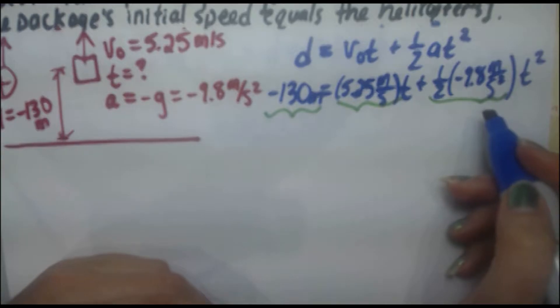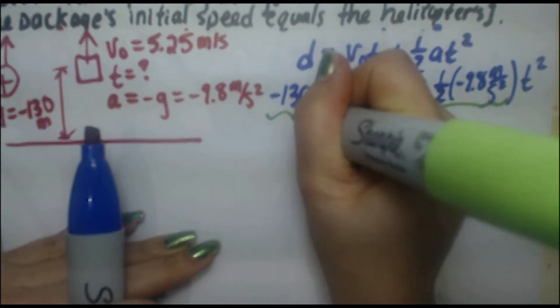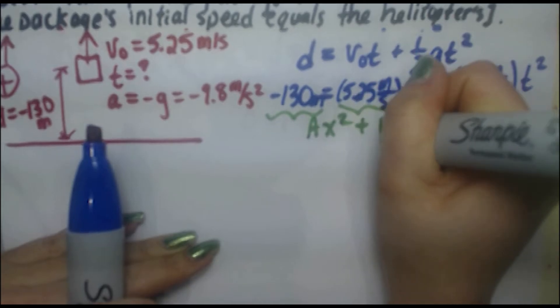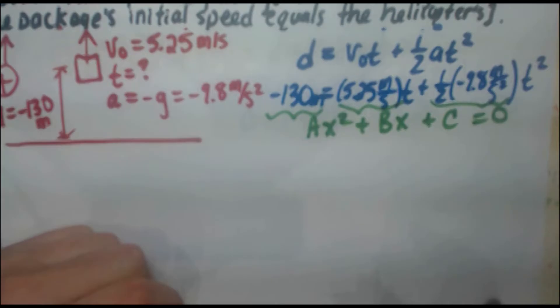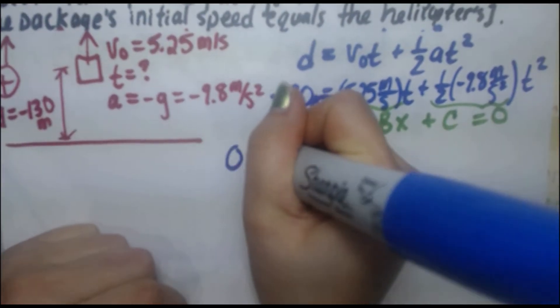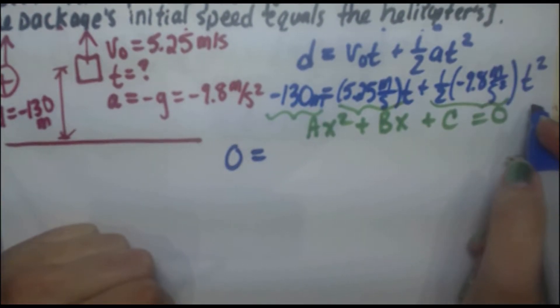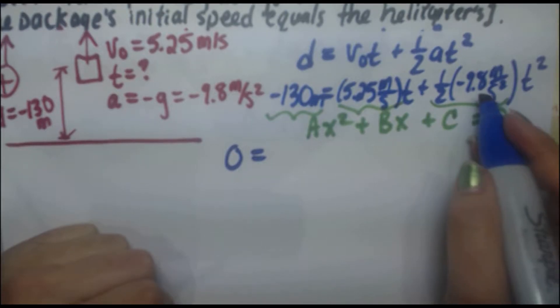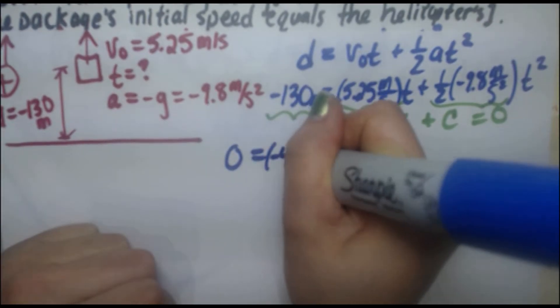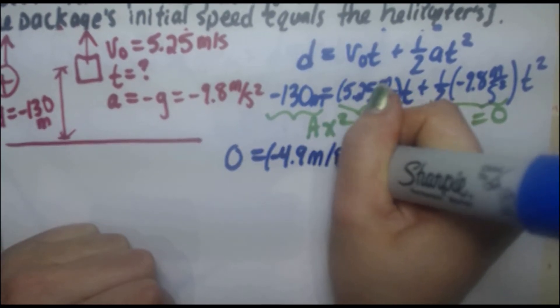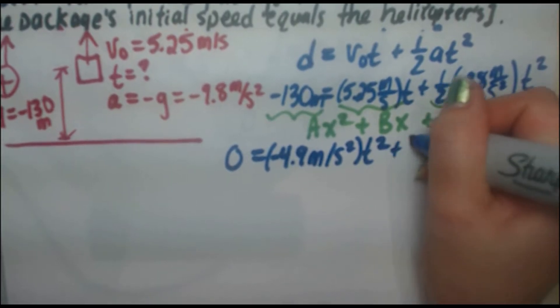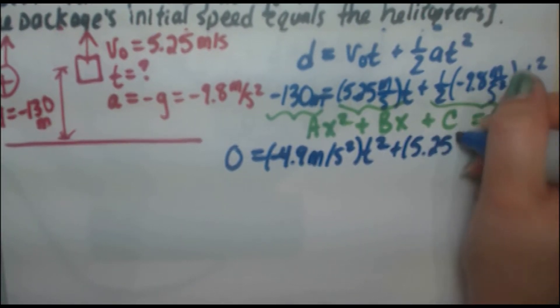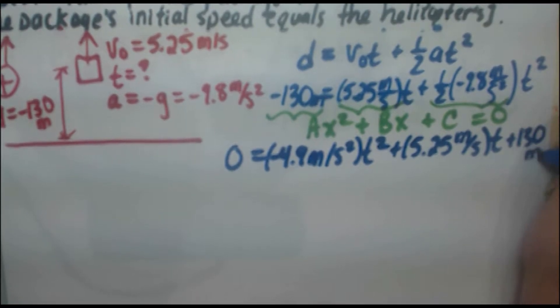And if it doesn't, you'll start getting used to seeing things like this with more practice. So as with any quadratic equation, I want to write it in the form ax squared plus bx plus c equals zero. So I'm going to get my zero on the left and I'm going to go ahead and bring this part to the front, my t squared term. So negative 9.8 times a half is minus 4.9 meters per second squared. So that's my t squared term plus 5.25 meters per second t plus 130 meters.